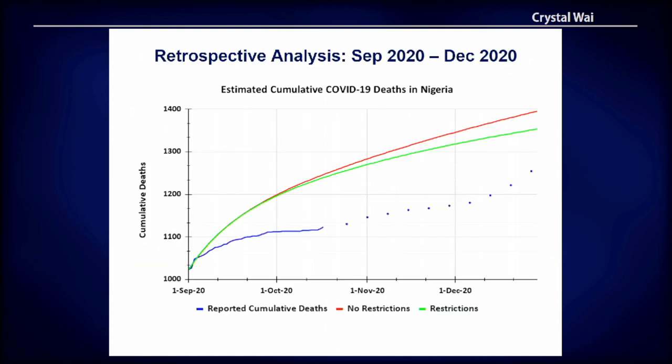The blue line represents actual reported deaths by the Nigerian Center of Disease Control. As you can see, there were daily reports until reporting shifted to about once a week, which is why we have these aggregated cumulative data points. The red and green lines represent scenario one and two — with and without restrictions. The model overestimated deaths, but by adjusting the parameters you can get a more accurate estimation.